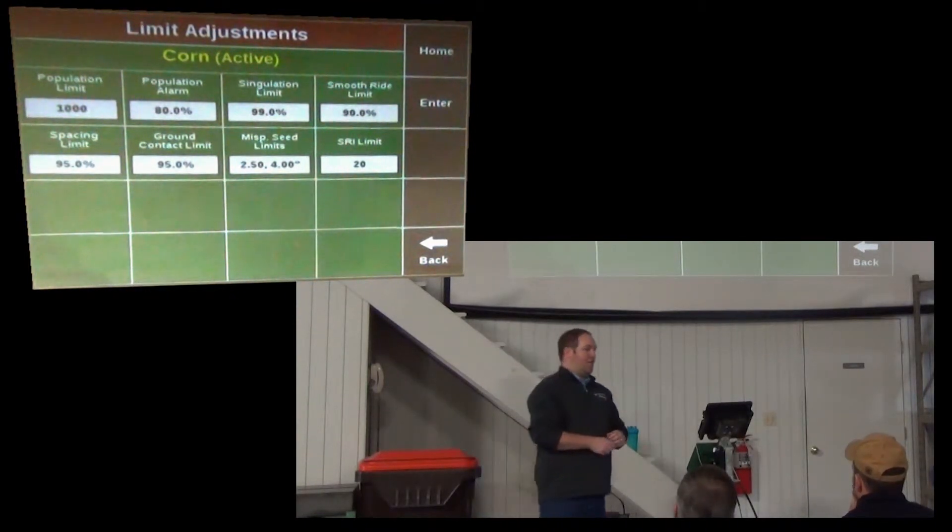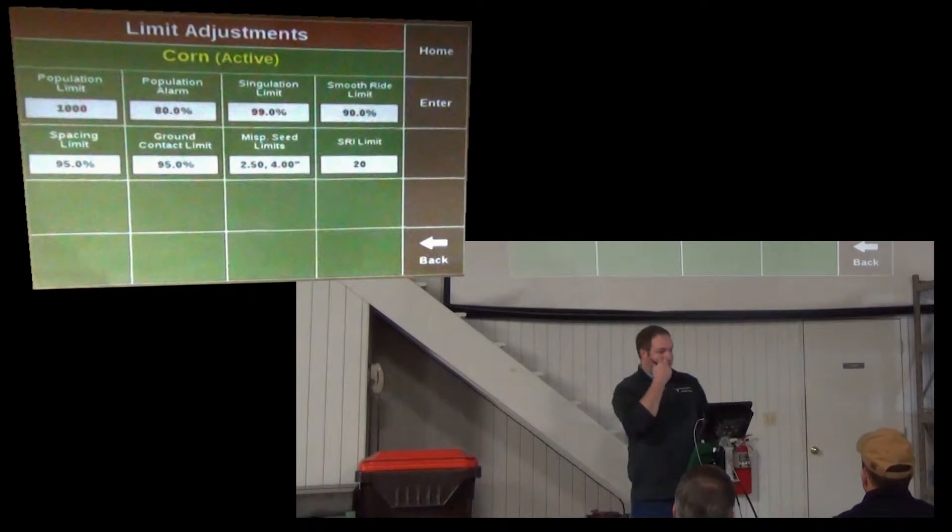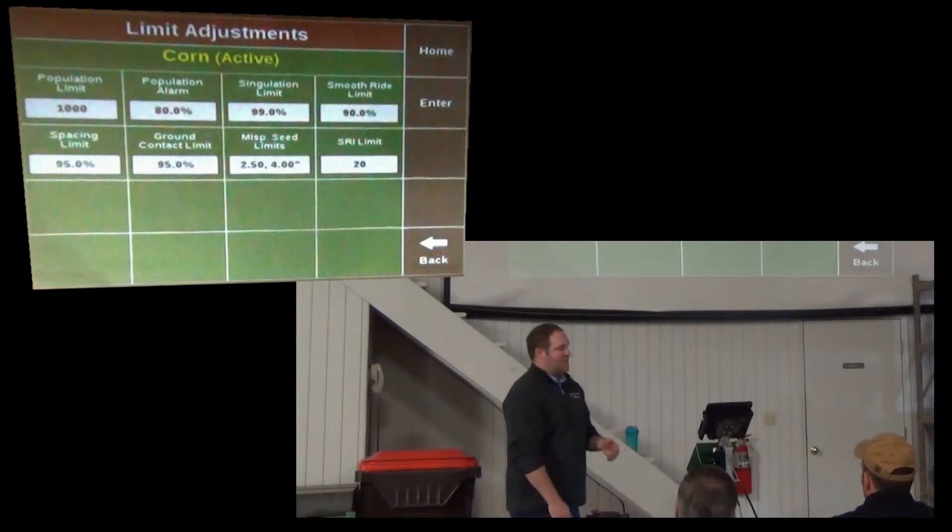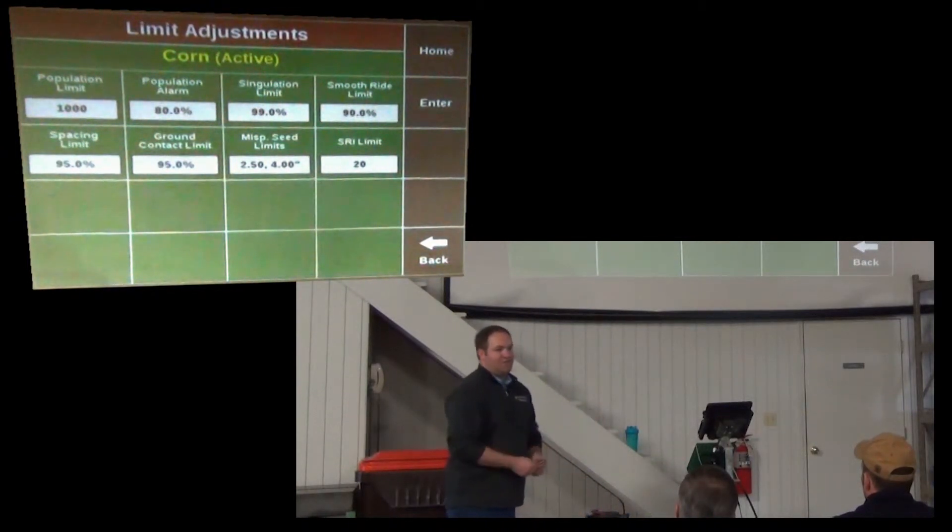So if you have a planter and the plants row by row, the population is very consistent, probably leave it at 1,000. But if your population row to row, you know, varies up to 1,000 seeds just because of the way the planter plants, you might want to put that at 2,000.